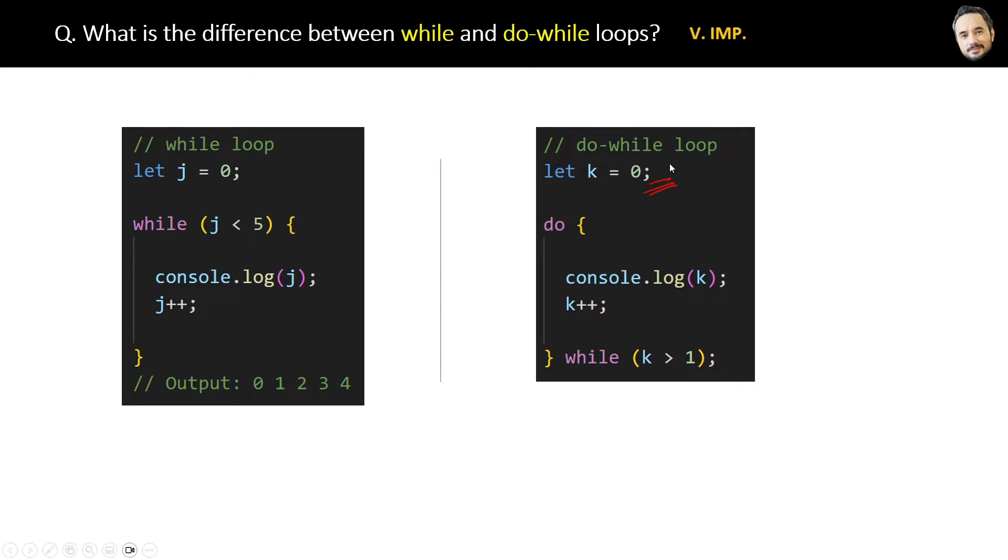Here the initial value of k is equal to 0, but our condition k is greater than 1, which means the condition is false. If it is a while loop, it will not execute inside the code. But do-while will definitely execute the code inside this do block first time, even if the condition is false. So here, do block code, this console.log will be executed, and the value of k which was 0 will be logged like this. And now after the increment, k will be equal to 1.